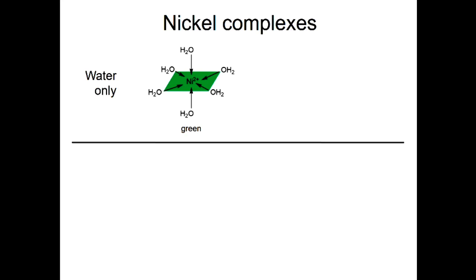The next set of demonstrations looks at these green solutions, which contain a nickel complex. We have a nickel ion — Ni — which is charged because it's lost some electrons. It has six water molecules stuck to it, making it a complex ion. That's why it's green — we won't explain why at this stage as that's year 13 A-level chemistry. All four beakers have the same solution; I'm going to start taking the waters off and replacing them with a different molecule, and it will change colour.